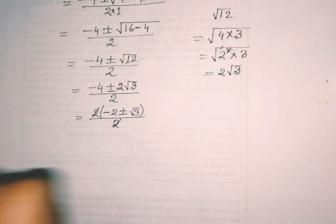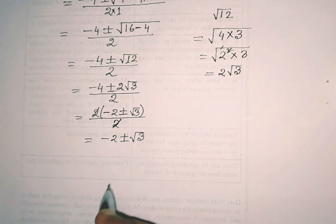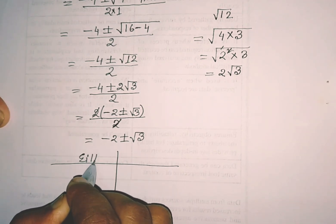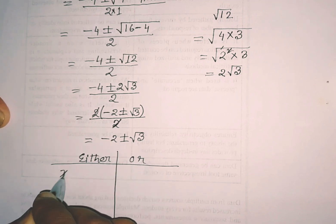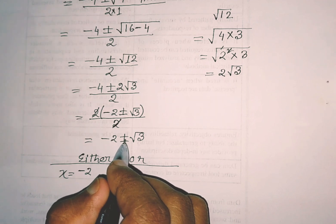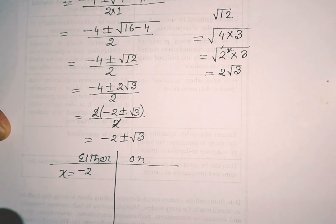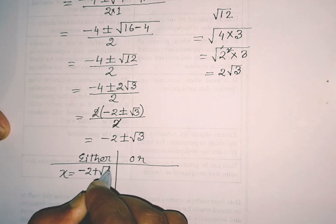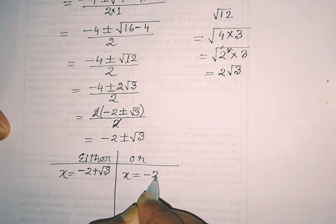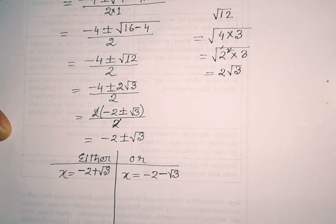After cancellation, we cancel terms. The result is x equals minus 2 plus or minus root 3. We write plus once and minus once — when we write plus, adding gives one answer; when we write minus, subtracting gives another answer.